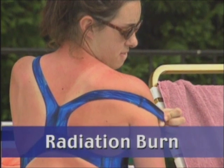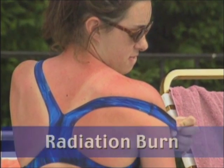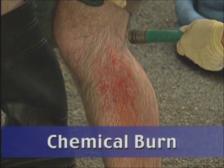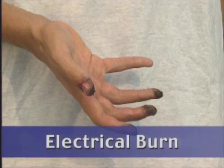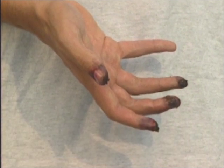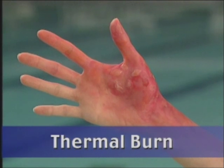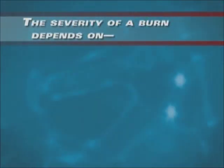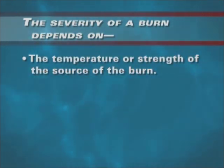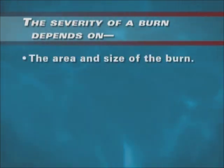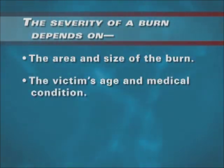There are several different types of burns. Radiation burns are caused by too much exposure to the sun. Chemical burns occur when certain chemicals come into contact with the skin. Electrical burns result when electrical current, such as from a power line, comes into contact with the body. Thermal burns are caused by contact with extreme heat and result in damage to the skin and underlying tissue. The severity of a burn depends on how many layers of soft tissue have been burned, the temperature or strength of the source of the burn, the length of exposure, the location of the burn, the area and size of the burn, and the victim's age and medical condition.